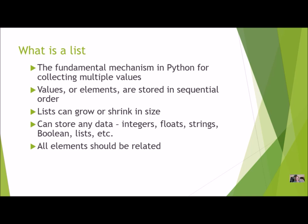The list is the fundamental mechanism in Python for collecting multiple values. These values or elements are stored in sequential order, and the list can grow or shrink in size. It can store any kind of data — integers, floats, strings, booleans — you can even have lists of lists. But in each list, all the elements should be related.